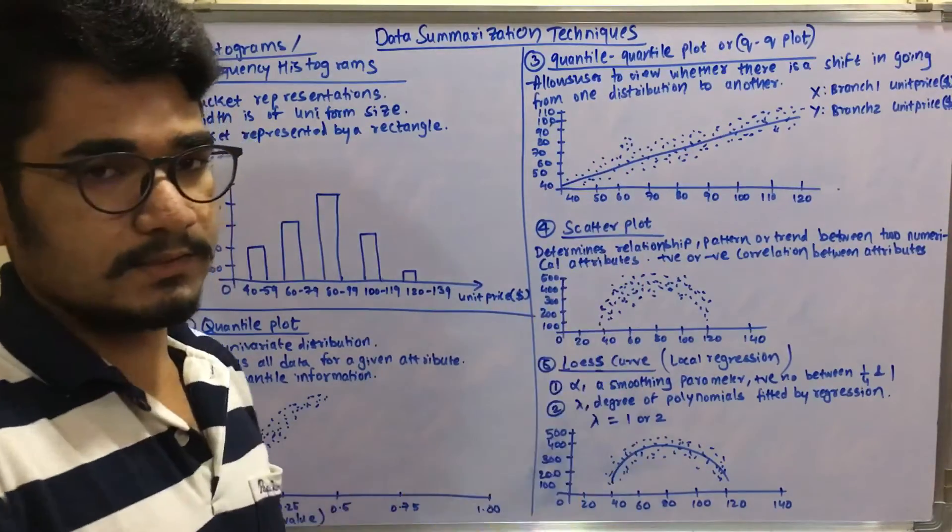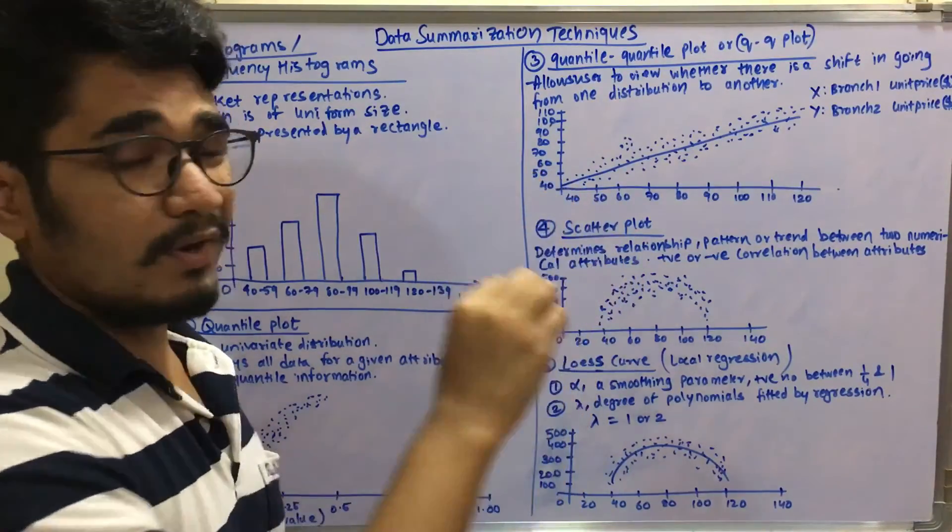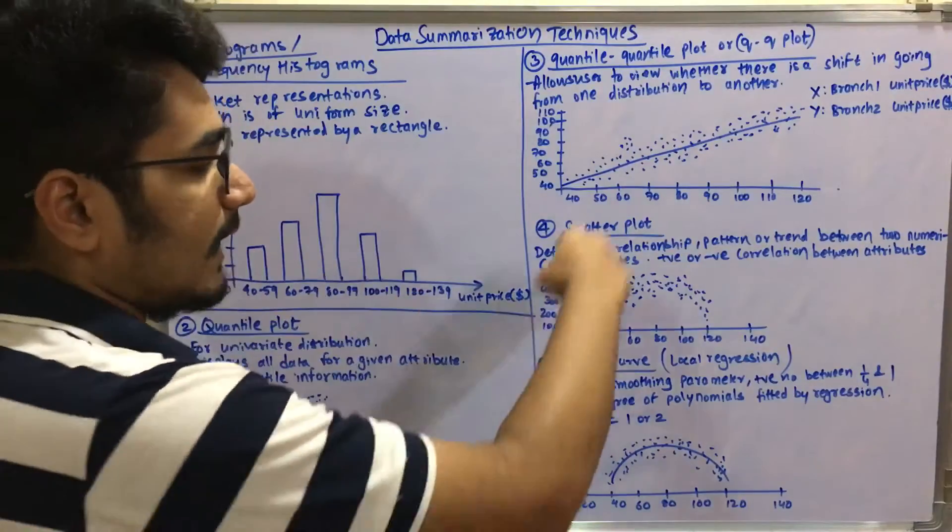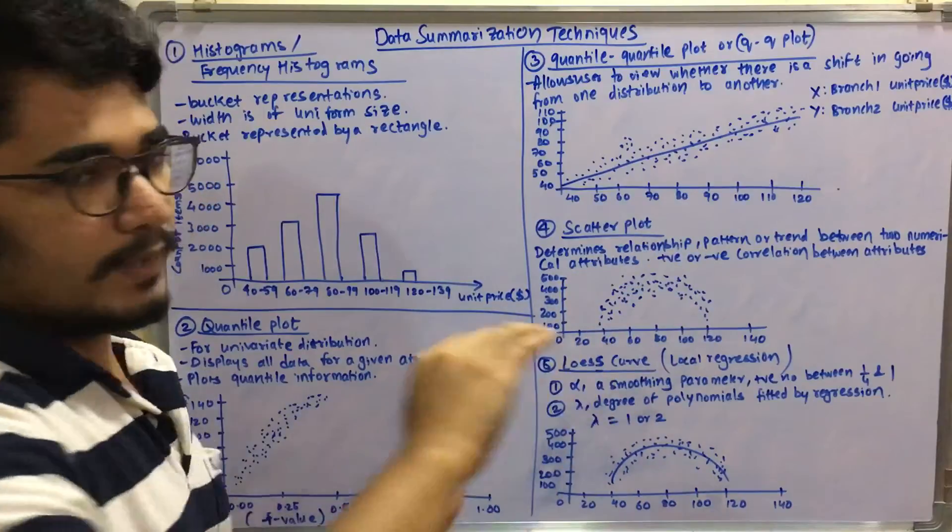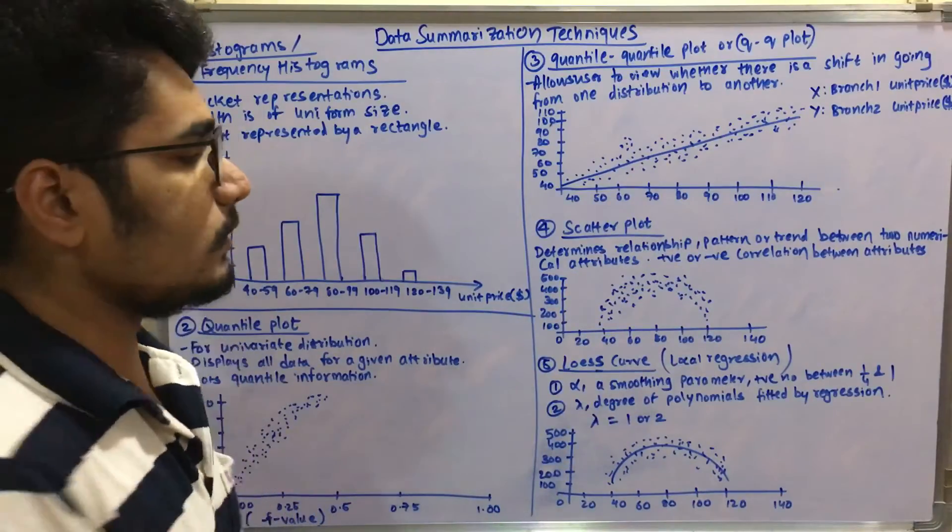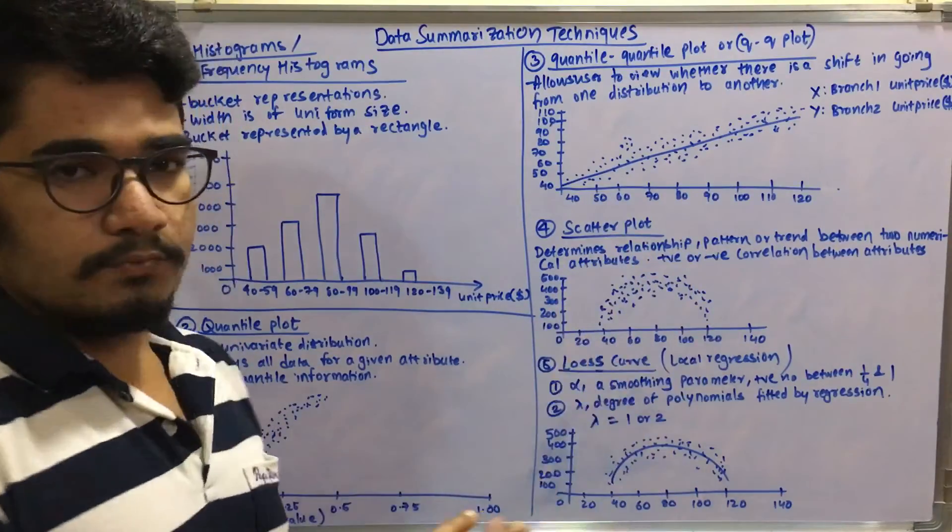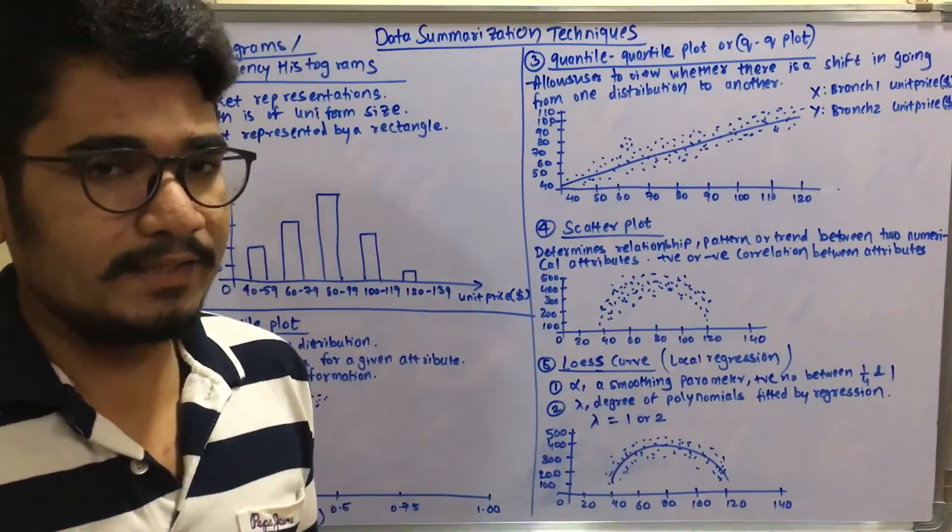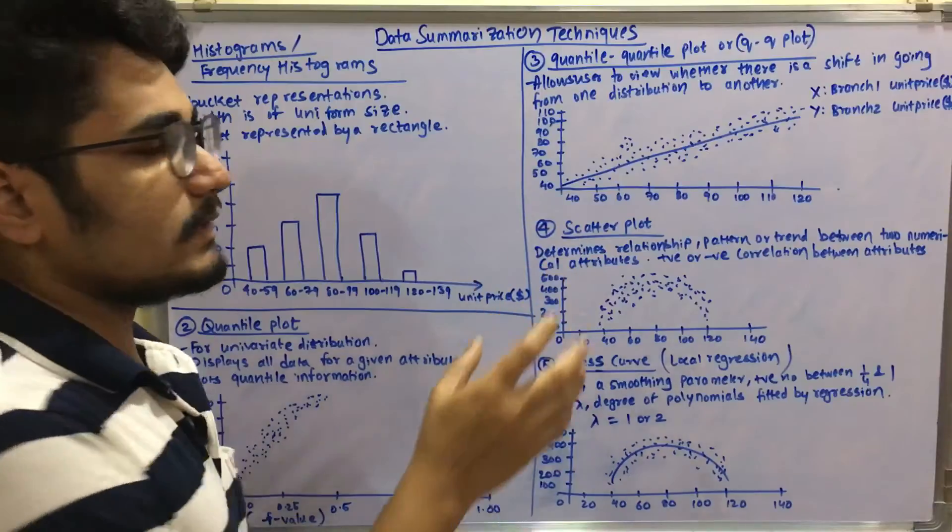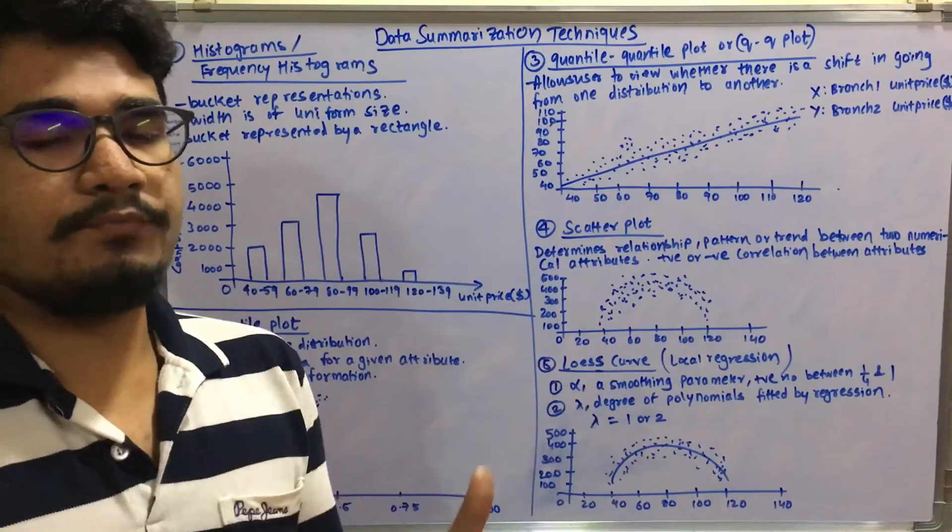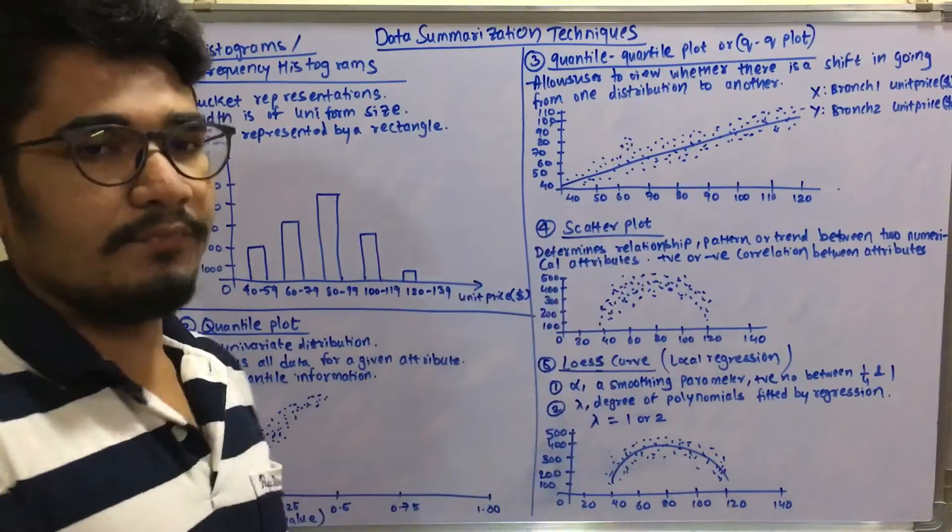So basically it scatters or plots different points, random points in a scatter fashion. There is no particular length or exponential growth, but there will be a kind of curve or some undistorted structure. So you use the scatter plot when the data is not uniform or it's used in univariate distribution.